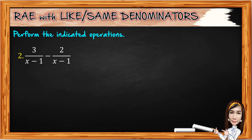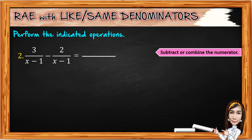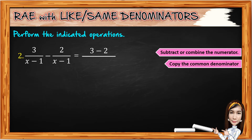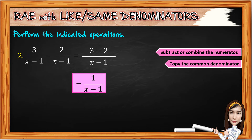For number 2, we have 3 over (X minus 1) minus 2 over (X minus 1). Subtract the numerators: 3 minus 2, then copy the common denominator X minus 1. Performing the operation on the numerator, 3 minus 2 equals 1 over (X minus 1). That is the final answer.